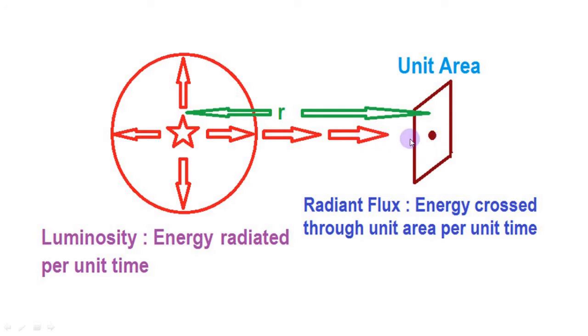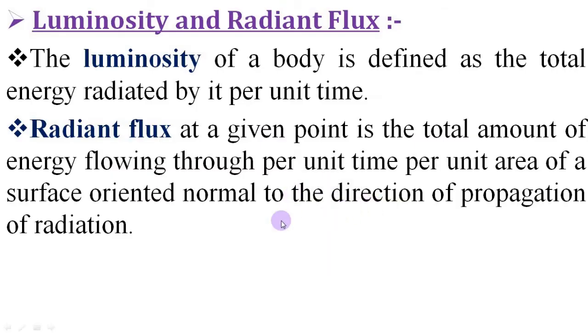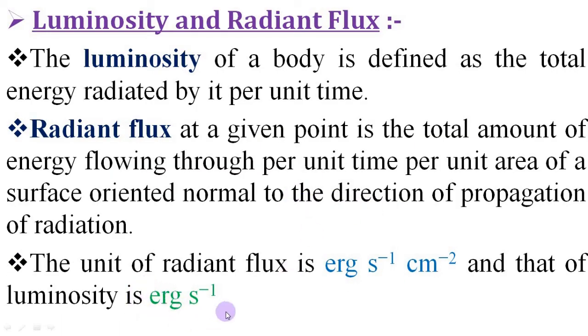That means, the amount of energy crossing through unit area perpendicular to the flow of radiation per unit time is the radiant flux at this point. This is the definition of radiant flux and this is the luminosity. Clearly, the unit of luminosity is erg per second whereas the unit of radiant flux is erg per second per centimeter square.